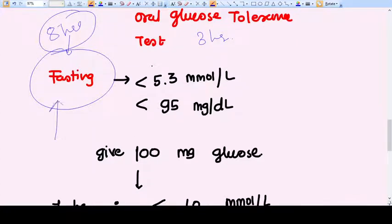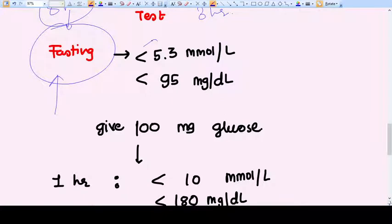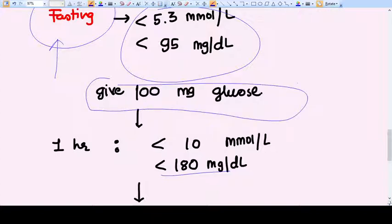When the patient comes to you with fasting, you will do a fasting blood sugar or blood glucose level measurement. It should come less than 5.3 millimole per liter or less than 95 mg per dL. Now, give the patient 100 mg of glucose as oral intake, whatever the results come here.